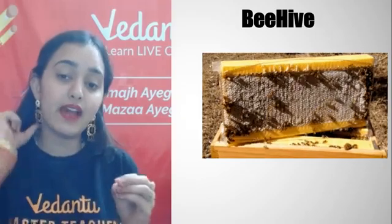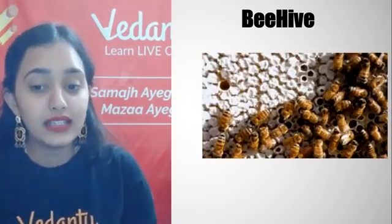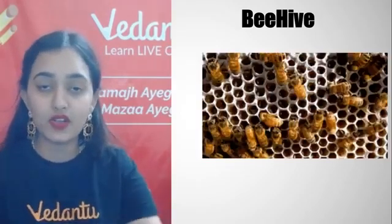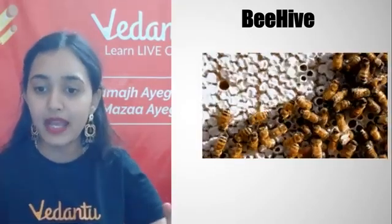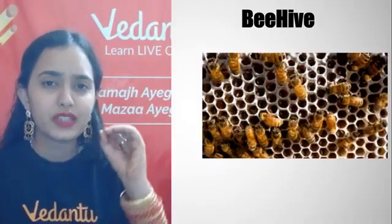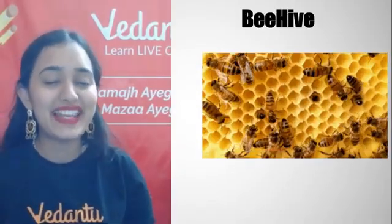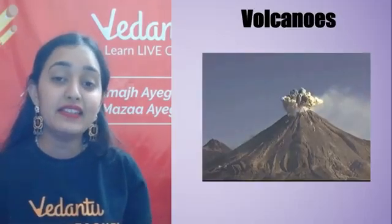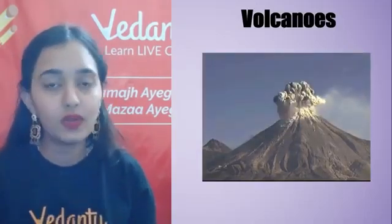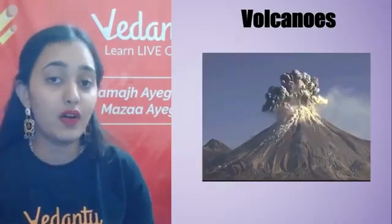That is why bees make hexagonal shapes — taaki usme koi bhi gap na aaye, koi bhi andar ghus na paaye, aur unki eggs aur honey bhi safe rahein. Similarly, volcano eruption — kisine nahi dekha ho, I think so. Dekha ho ga toh kya observe kiya?